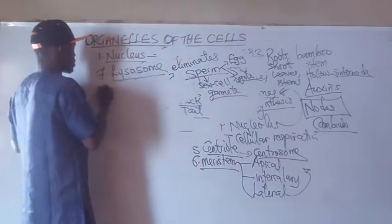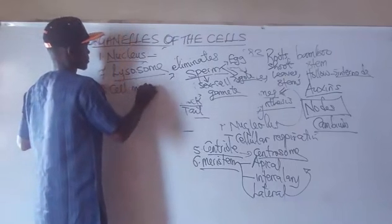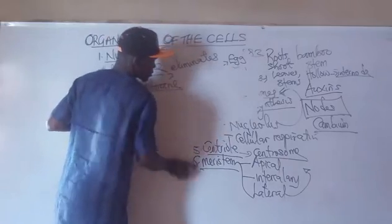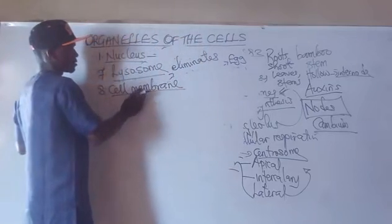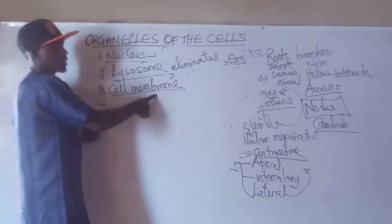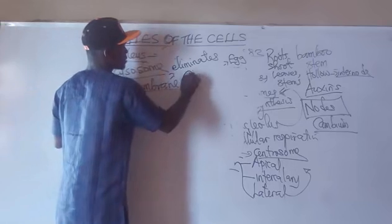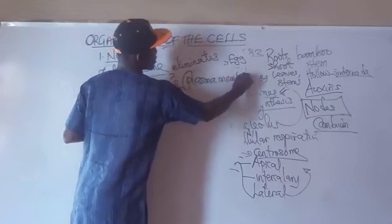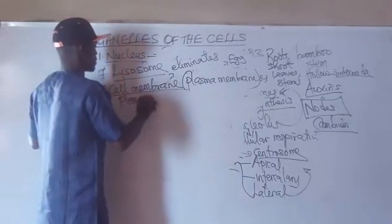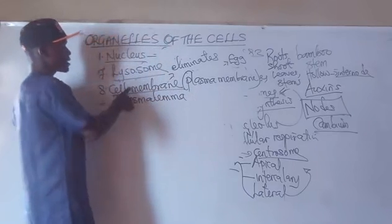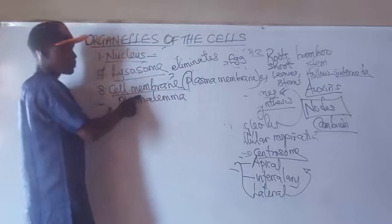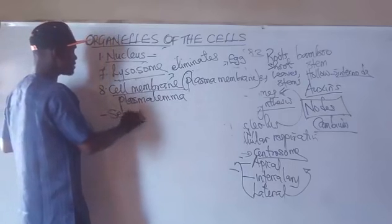The next organelle is the cell membrane. If you are asked to list organelles that make up the cell, don't forget to list the cell membrane. The cell membrane can also be called the plasma membrane. The cell membrane is selectively permeable — or semi-permeable — because it dictates the kind of materials that enter and leave the cell.